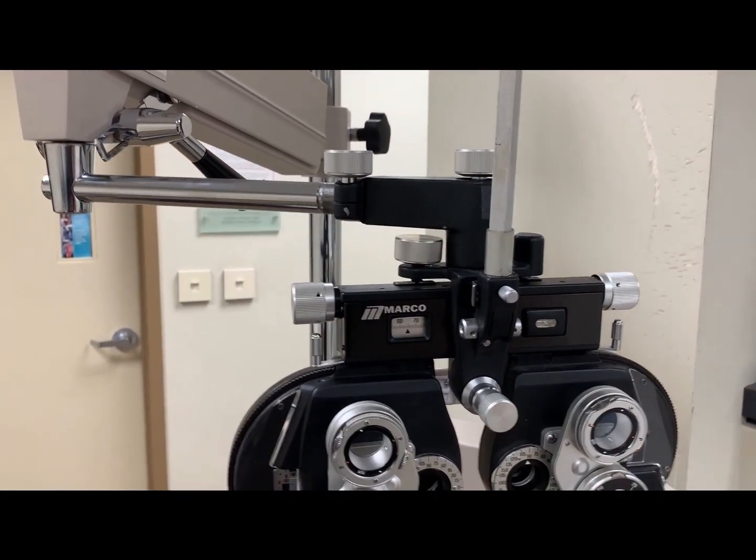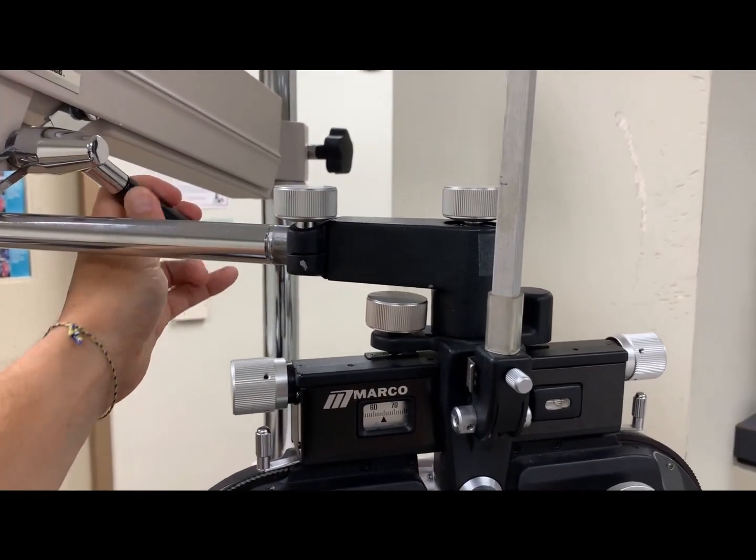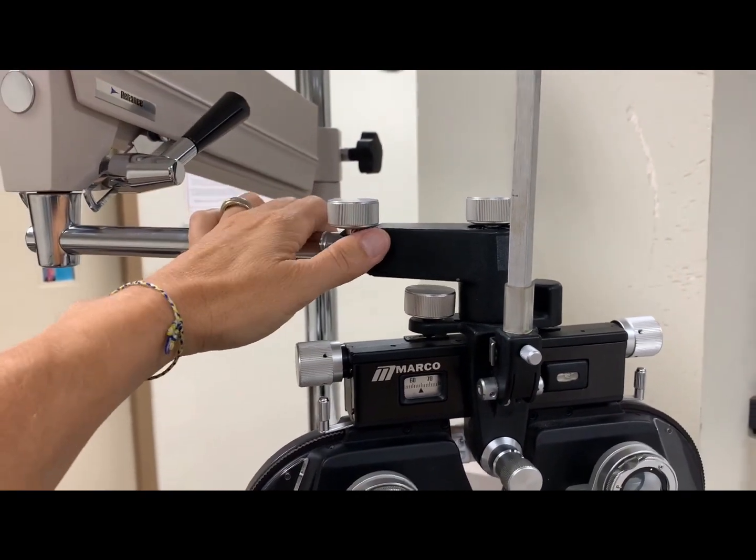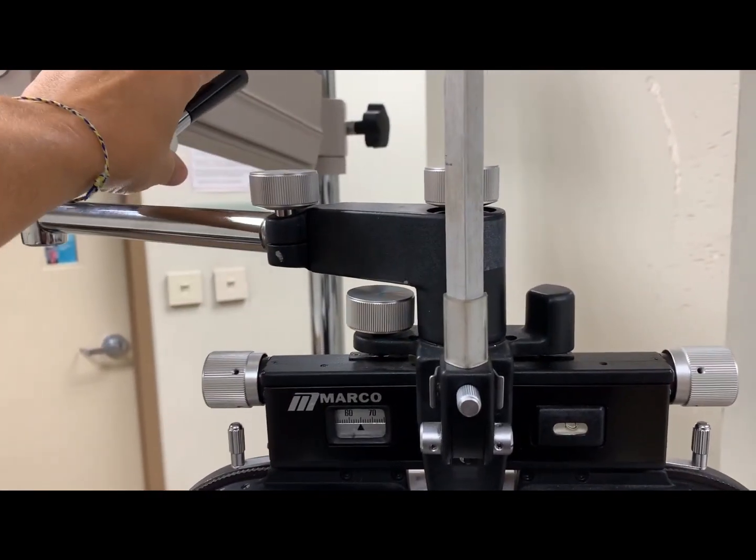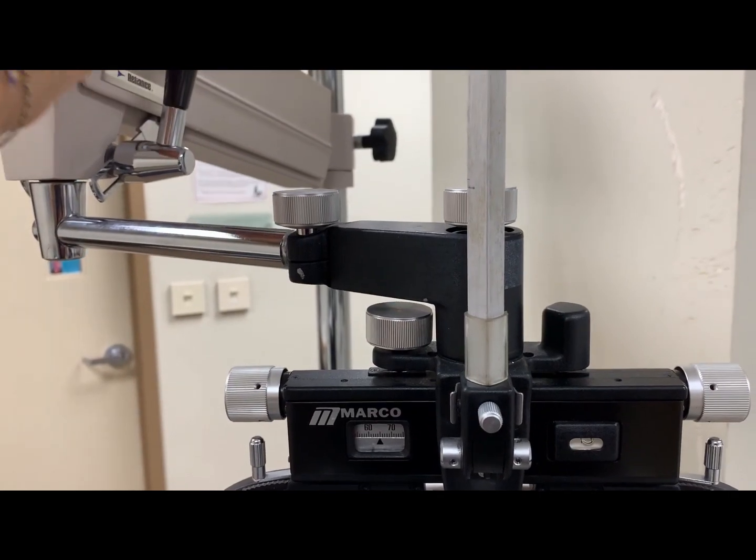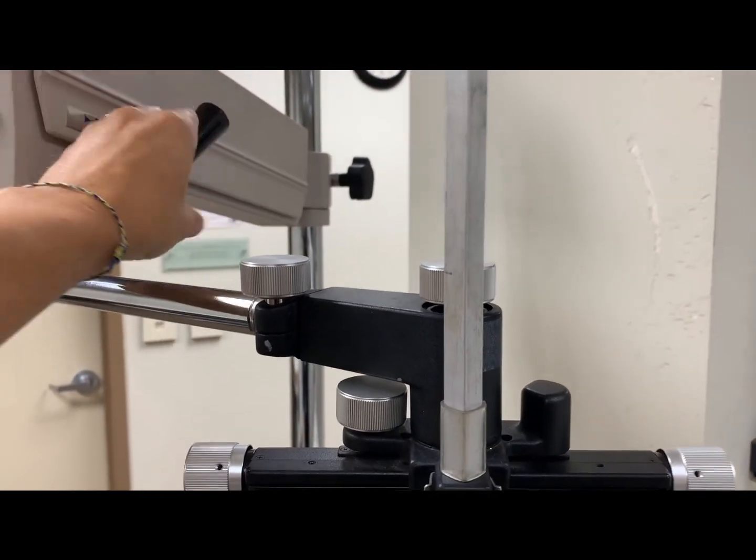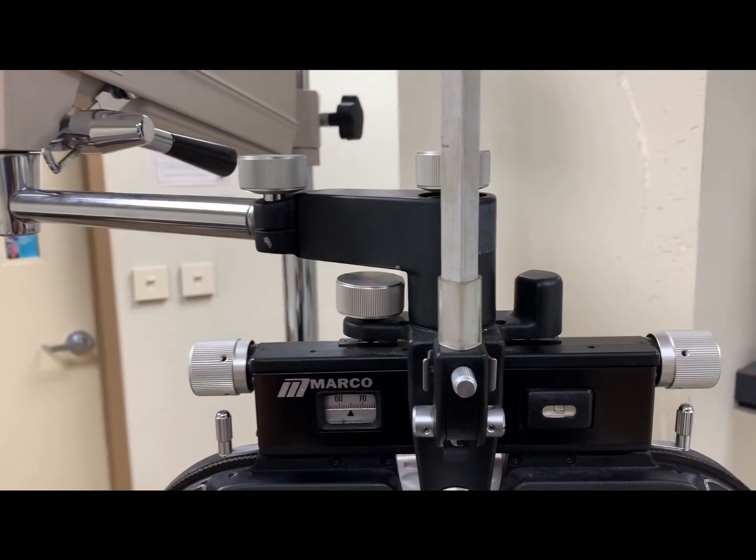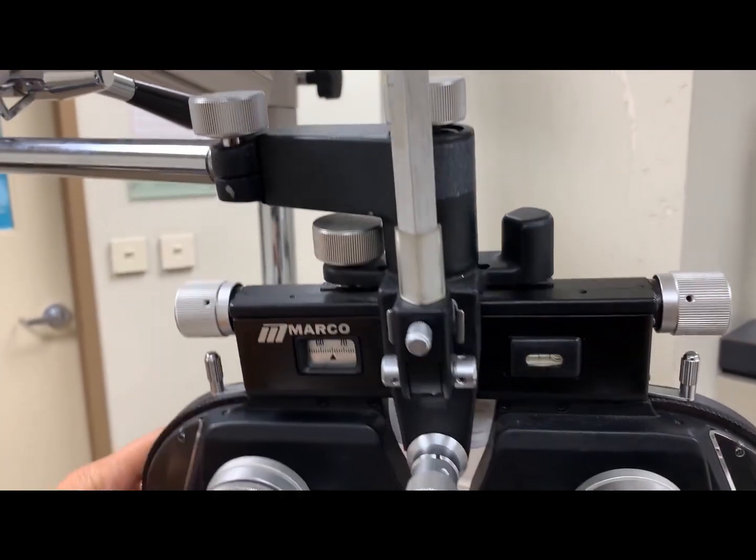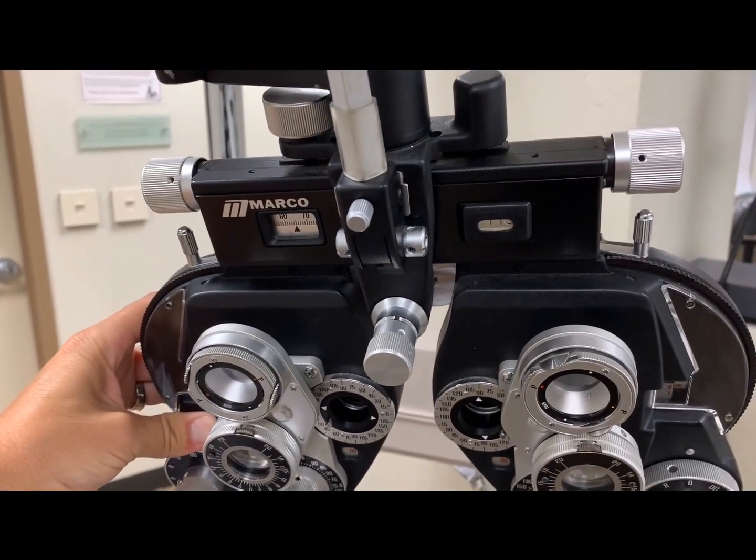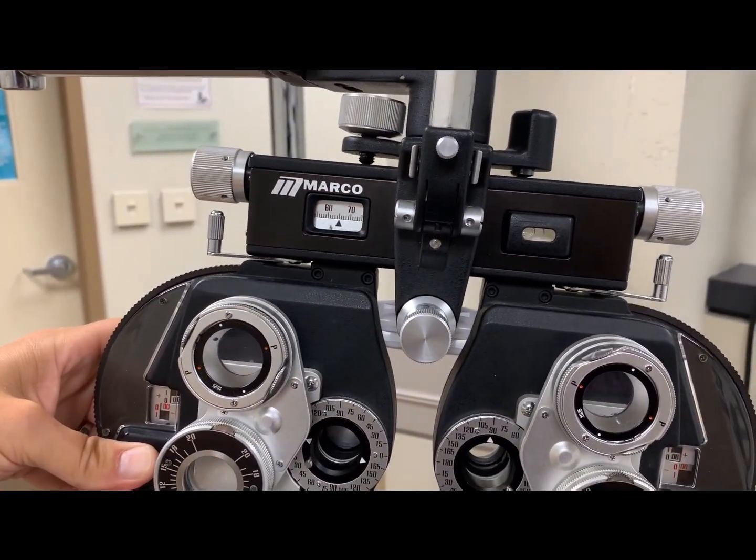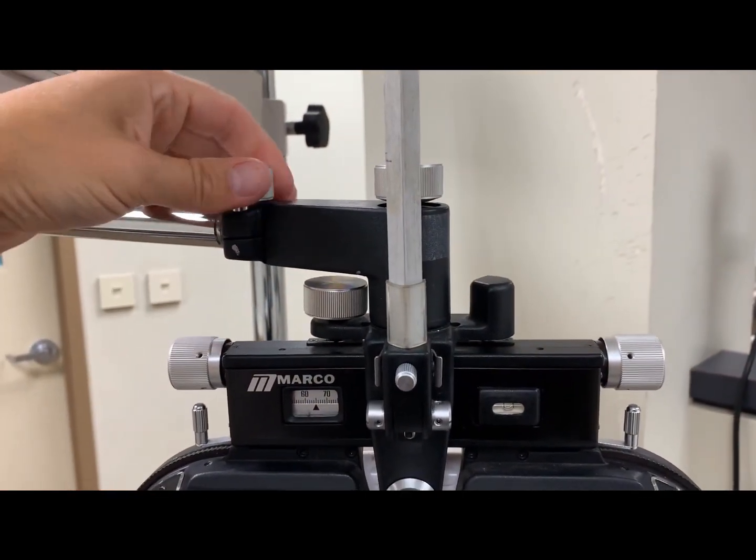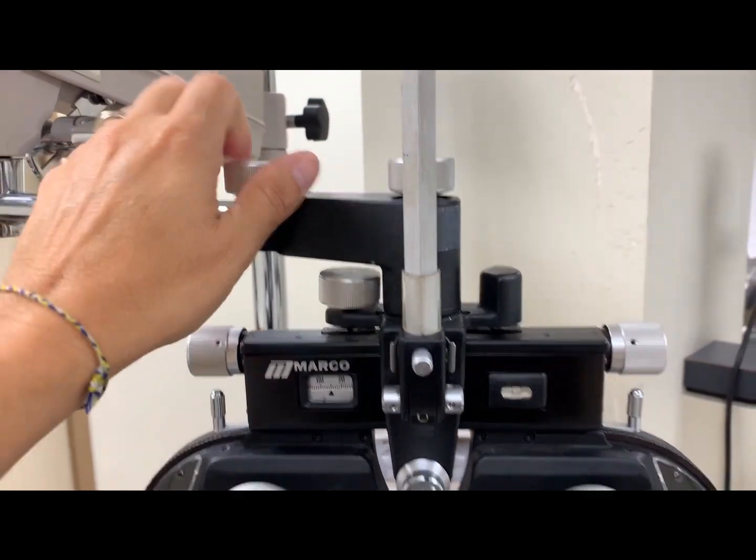First of all, covering the lock knobs. The initial lock knob here on the arm is going to release the phoropter and allow it to swing in front of your patient. Always make sure that the lock knob is unlocked prior to moving the instrument. Next, you've got a lock knob here. This, by loosening it, will allow you to increase the panto of the phoropter, pushing you closer to the patient, or to increase the retro on the phoropter, bringing it away from the patient. Always make sure that this lock knob is tightened as you begin your sequence.